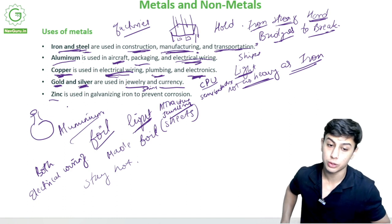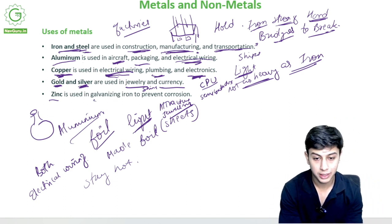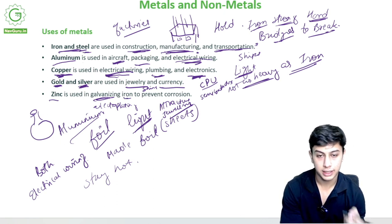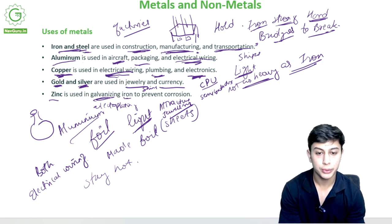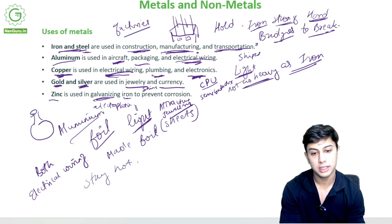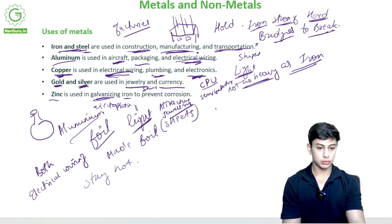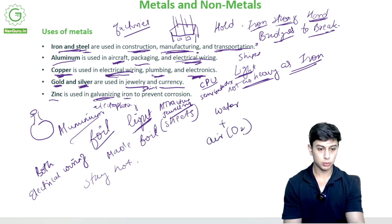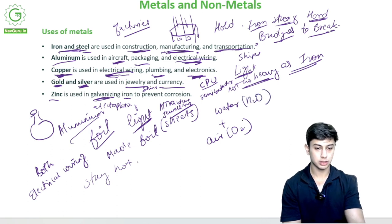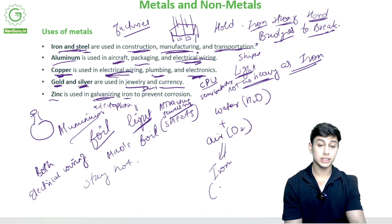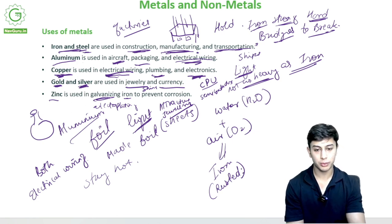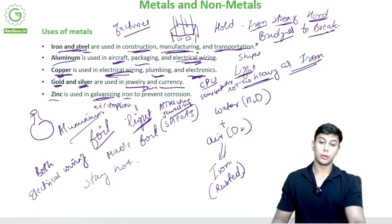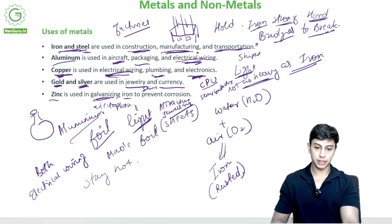Zinc is used in galvanizing iron to prevent corrosion. Galvanizing is a type of electroplating — iron tends to get rusted. When iron comes in contact with water (H₂O) plus air (O₂), it gets oxidized — also called rusting. It will lose its shine, become weak, wear off, and break. To prevent that, we use electroplating.